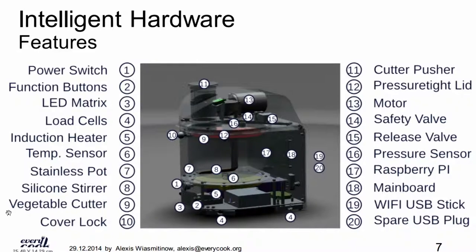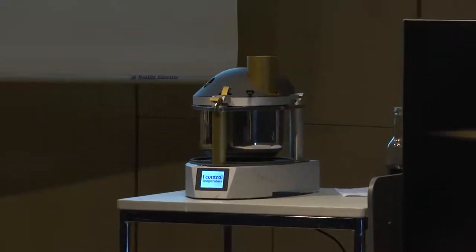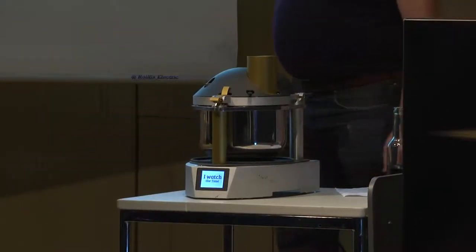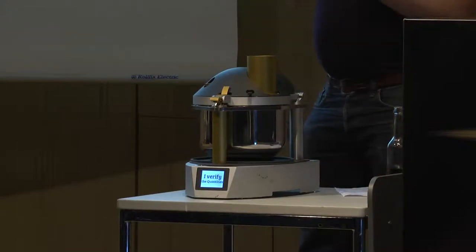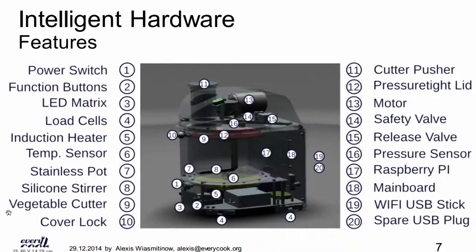We moved on developing prototypes. That's the fourth generation — it's actually over there at the food hacking base right now. Probably making fudge. On the front we have a power switch and function buttons for direct interaction on the device. We don't want everything on a tablet or mobile device because we're never sure about connectivity, so there must be a way to safely turn the device off.